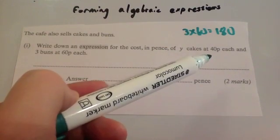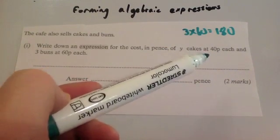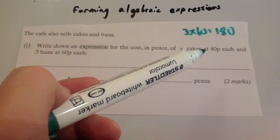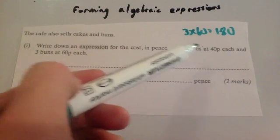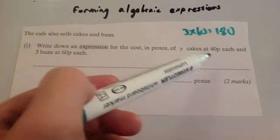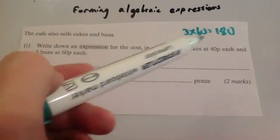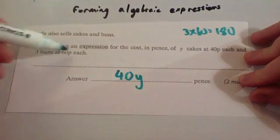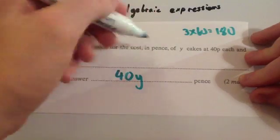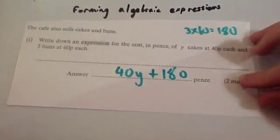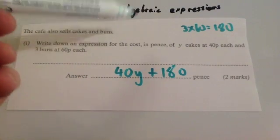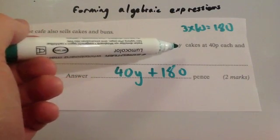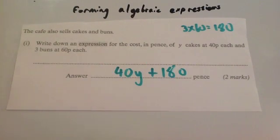Now we need to consider the cakes. You're buying y cakes at 40 pence each. One cake would be 40p, two cakes would be 80p, three cakes would be 120p. So you're multiplying 40p by the number of cakes. To find the cost of y cakes you do y times 40, but in algebra the number comes first, so it's 40y. The cost of the 3 buns is 180 pence, so the full expression is 40y plus 180.